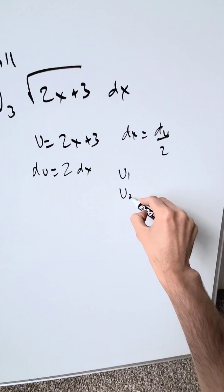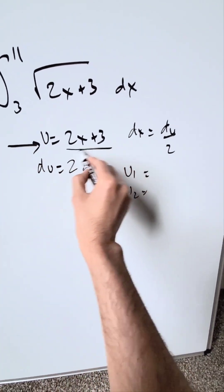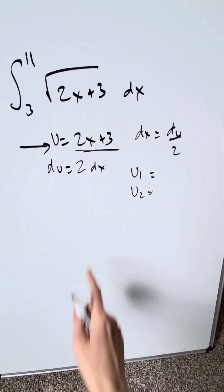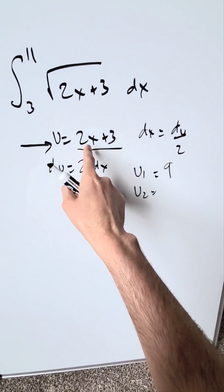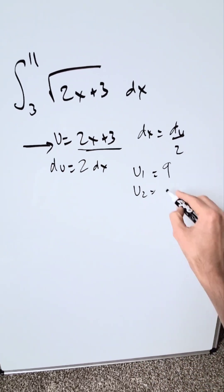I'll have new limits u1 and u2 based on everything here and their lower limit, upper limit running through. 2 times 3 plus 3, that's a lower limit of 9. 2 times 11 plus 3, that's going to be a 25.